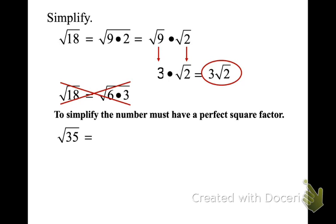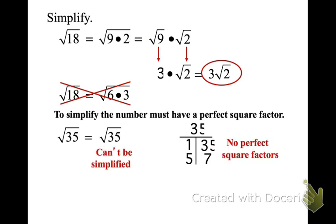To simplify a number, it must have a perfect square in it. For √35, the only factors are 1, 35, 7, and 5 — so we can't simplify that. There's nothing that can be simplified. 35 is already in its most simplified form.